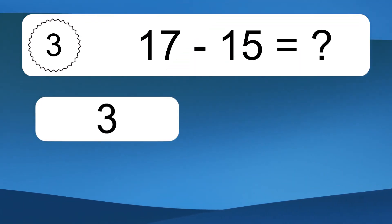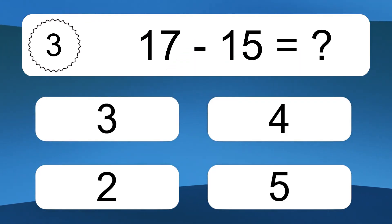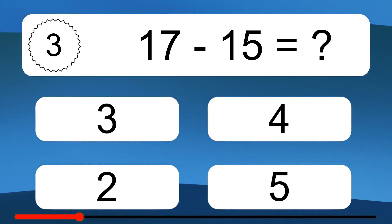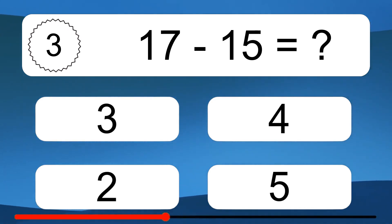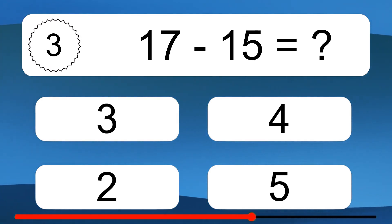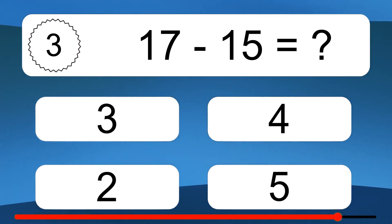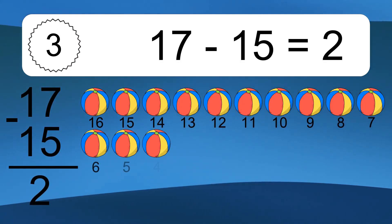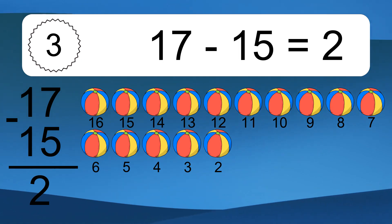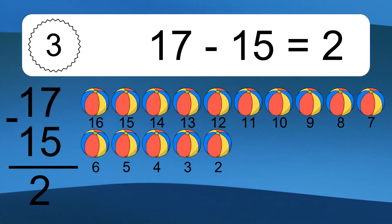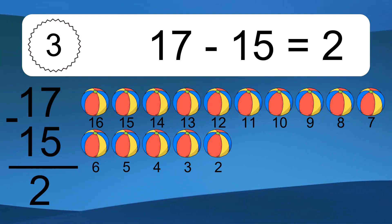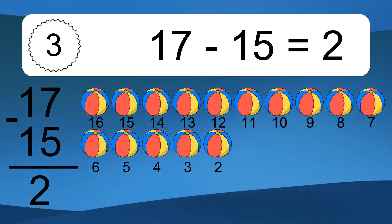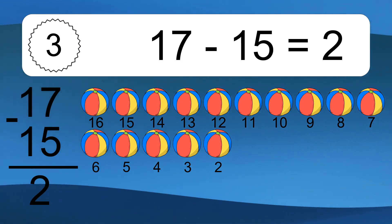17 minus 15 equals what? 17 minus 15 equals 2. Let's count it: 16, 15, 14, 13, 12, 11, 10, 9, 8, 7, 6, 5, 4, 3, 2.